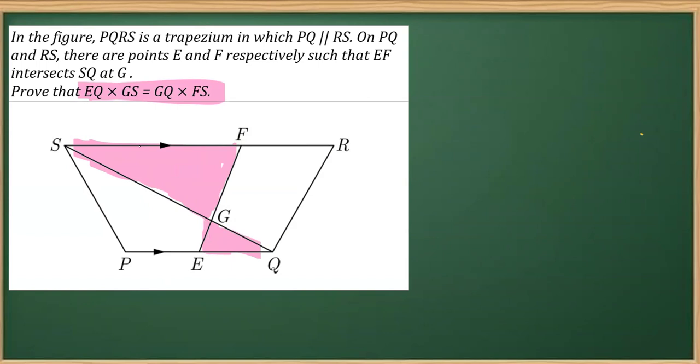Since these two lines are given parallel, we can use the alternate interior angle concept and say that this angle will be equal to this. Let's mark this angle as 1 and this as 2. Further, considering FG as the transversal, we can say these two angles are equal, so angle 3 is equal to angle 4.